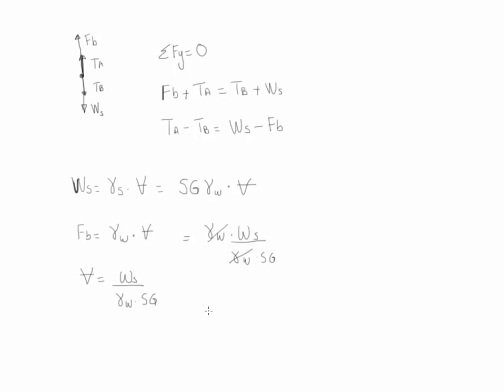If we substitute the two values into the equation that we're looking for, we see that TA minus TB is going to be equal to the weight of the sinker minus the buoyancy force, which is basically the weight of the sinker divided by the specific gravity of the sinker. Therefore, we could say simply that TA minus TB is equal to 0.365 pounds.